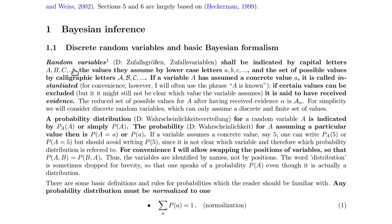Random variables are indicated by capital letters, while if they are instantiated and assume a concrete value, they are indicated by lowercase letters. The set of possible values is indicated by calligraphic letters. The concrete values of the random variables have certain probabilities, written as P_A(a), where P indicates a probability, the subscript A indicates the variable, and the lowercase a is the value for which we want the probability.